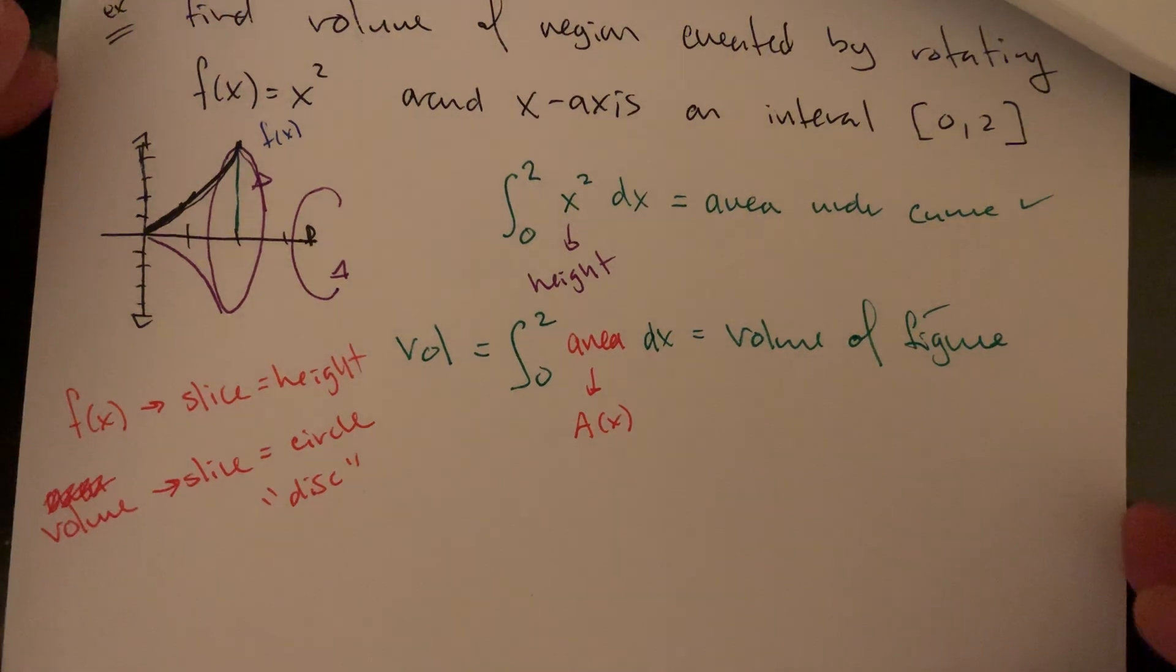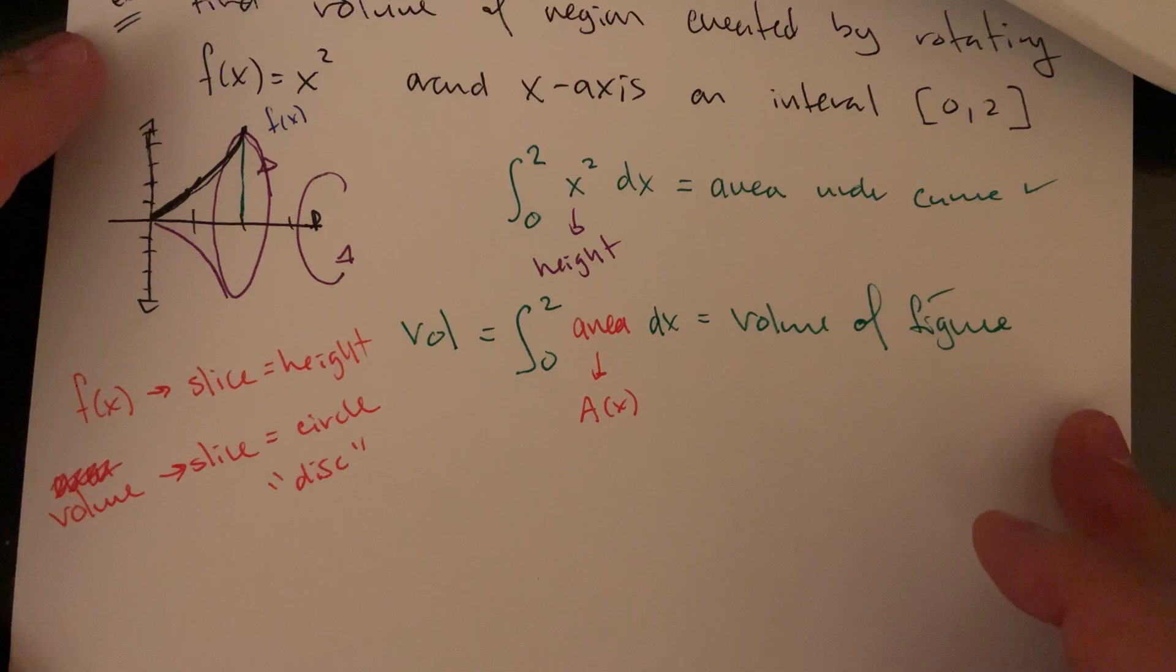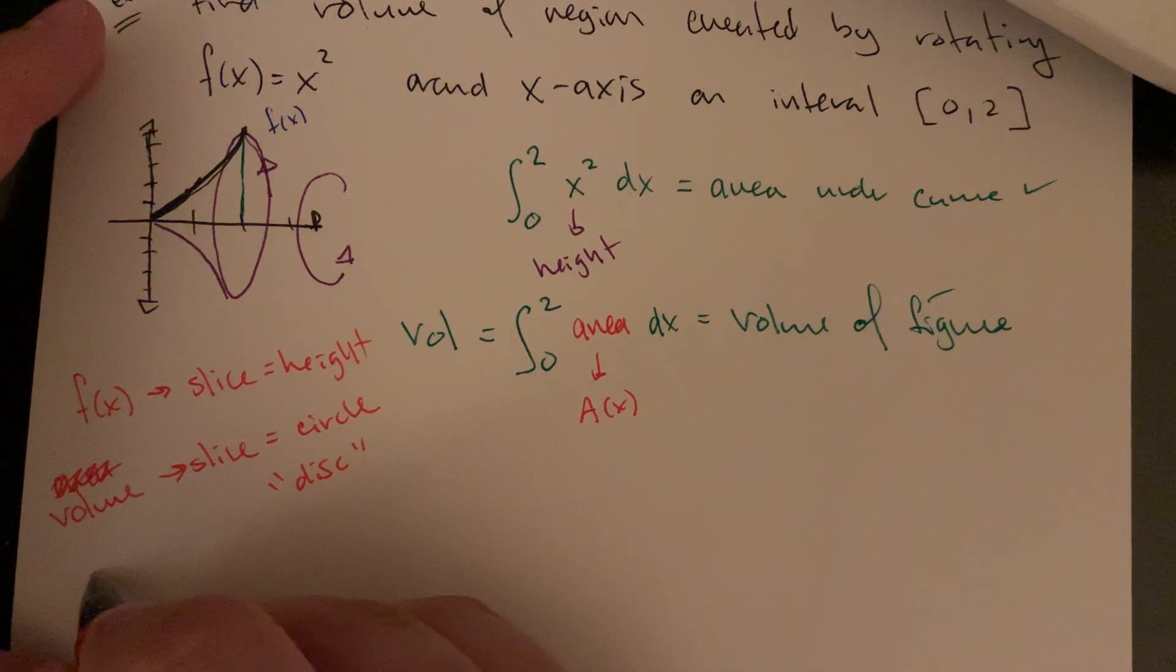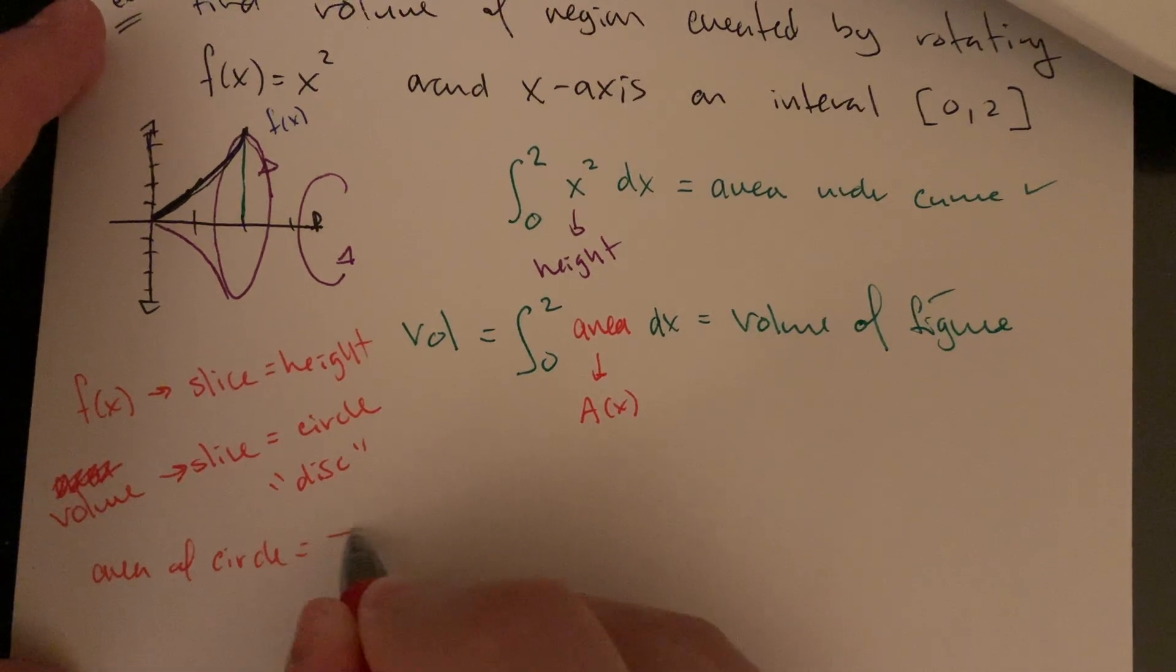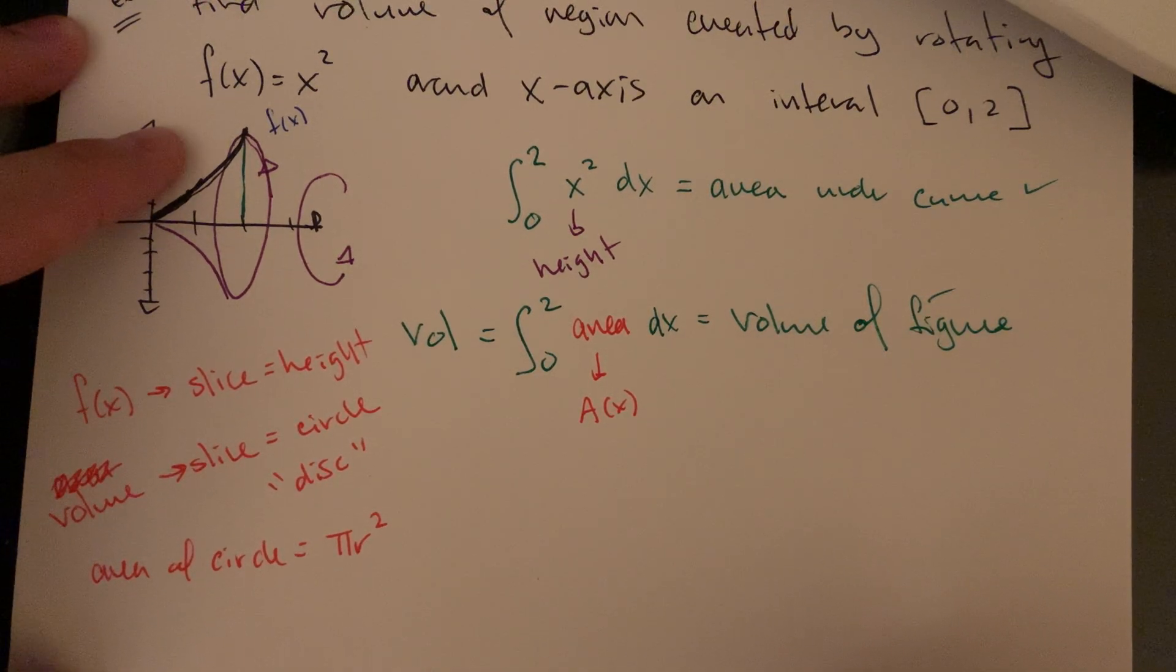So the area here is going to be a circle type area. So what's the area of a circle? Of course, π times r².